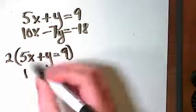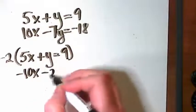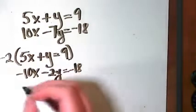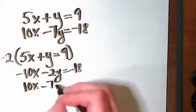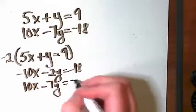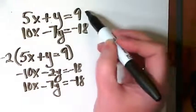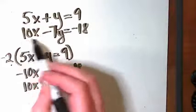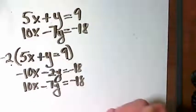And I would end up with negative 10x minus 2y equals negative 18, and then positive 10x minus 7y equals negative 18. I took the first equation and I multiplied it by negative 2 because I wanted to get the opposite of this 10x. You see what I've done there?